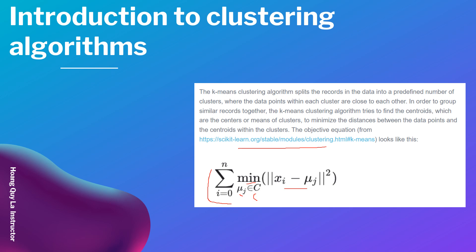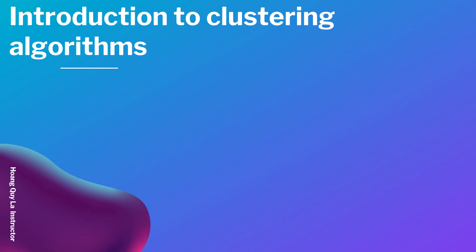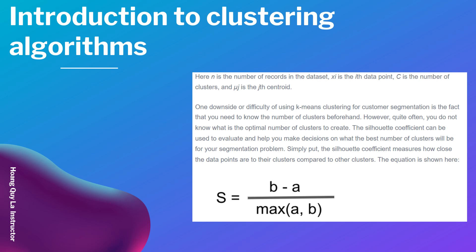This equation is taken from the scikit-learn website, and the link is provided here. In the equation, n is the number of records in the dataset, x_i is the i-th data point, C is the number of clusters, and mu_j is the j-th centroid. One downside of using k-means clustering for customer segmentation is that you need to know the number of clusters beforehand. The silhouette coefficient can be used to evaluate and help you decide what the best number of clusters will be for your segmentation problem.